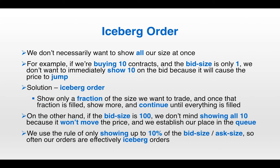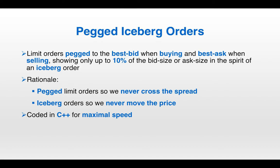We use a rule of only showing up to 10% of the bid size or ask size, so often our orders are effectively iceberg orders. If the bid size is less than 100 and we're trying to trade 10, it will be an iceberg order — we show less than 10, and once that's filled we put in the order for the remainder. Putting it all together, we have pegged iceberg orders: limit orders pegged to the best bid when buying and the best ask when selling, showing only up to 10% of the bid or ask size. We use pegged limit orders so we never cross the spread, and iceberg orders so we never move the price. Finally, it's important that the execution algorithm runs very fast — if the best bid rises, we want to adjust our bid immediately to establish our place in the queue. Because speed is critical, the execution algorithm is coded in C++, a very fast programming language.